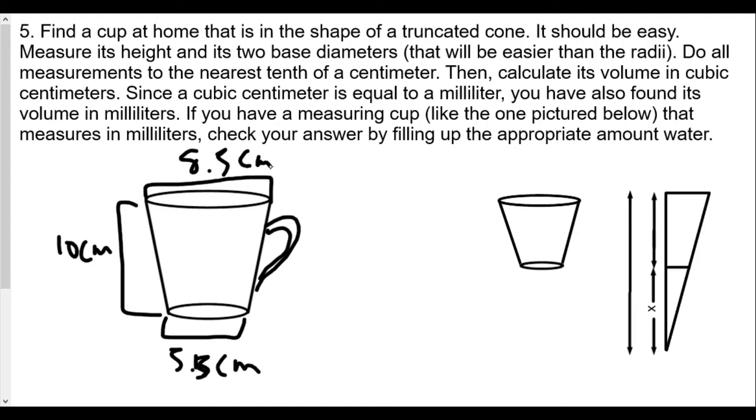We'll fill in our information. This would be 10, therefore the original cone would be x plus 10. Half of 5.5 is 2.75, so this measure would be 2.75. Half of 8.5 would be 4.25. Let's set up our proportion to find our value of x. We have the big triangle: x plus 10 over the base of 4.25.